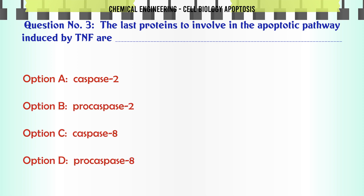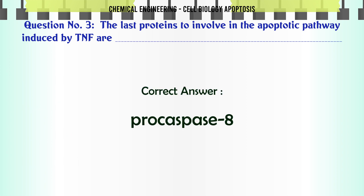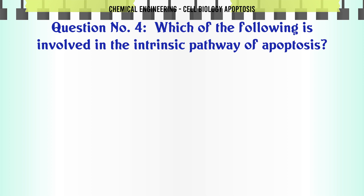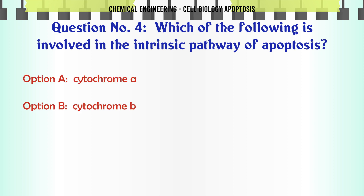The last proteins to be involved in the apoptotic pathway induced by TNF are: A. Caspase 2, B. Procaspase 2, C. Caspase 8, D. Procaspase 8. The correct answer is Procaspase 8.